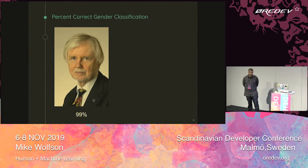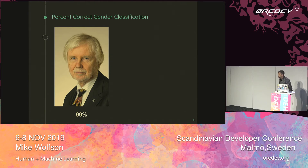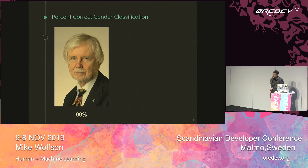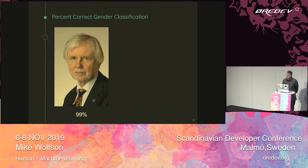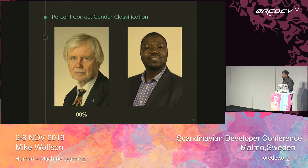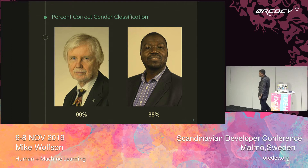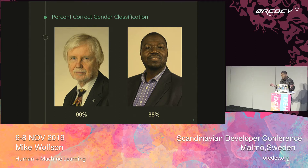When they started to look at how the image classification systems were performing for gender classification, they looked at white males. What they were trying to do is classify whether the person in the photograph was male or female. If you are a white male, the classification algorithms generally got your classification correct 99% of the time. That's really awesome — super high accuracy. However, if you're a black gentleman, that accuracy rate went down to 88%. Still not terrible, but not great. And this is just because of the color of that gentleman's skin.